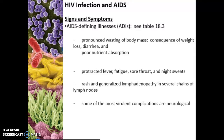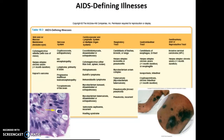Towards the end there can be neurological effects. This is the actual list of AIDS-defining illnesses — once a person's CD4-positive T cells drop below a certain level, their body is no longer able to fight off infections, and anywhere in the body can be affected. Areas include the skin, mucous membranes, the nervous system, cardiovascular system, respiratory tract, GI tract, and the genitourinary or reproductive system.